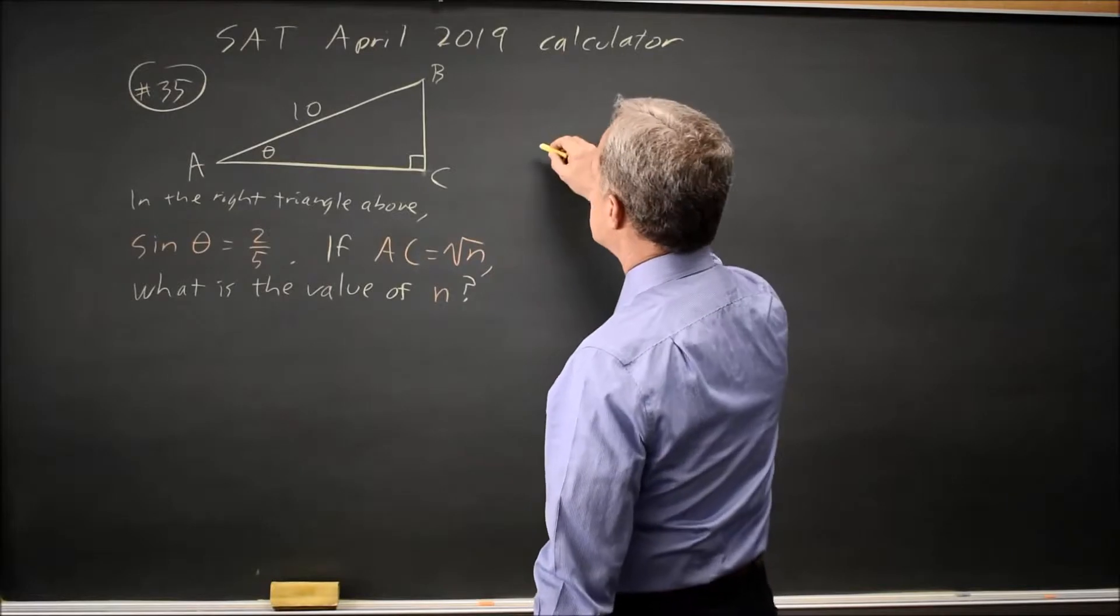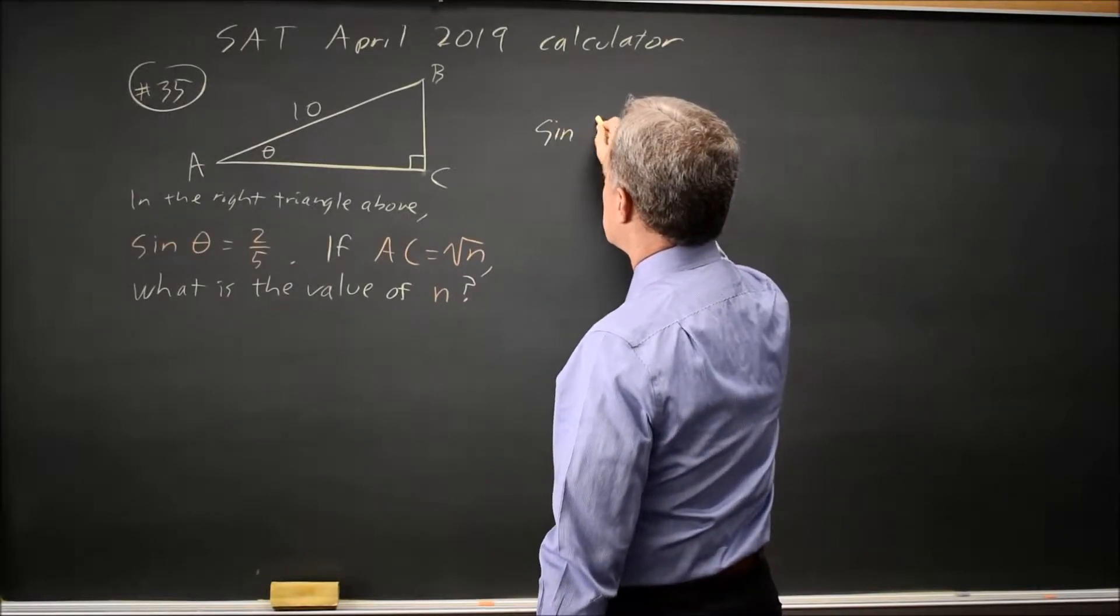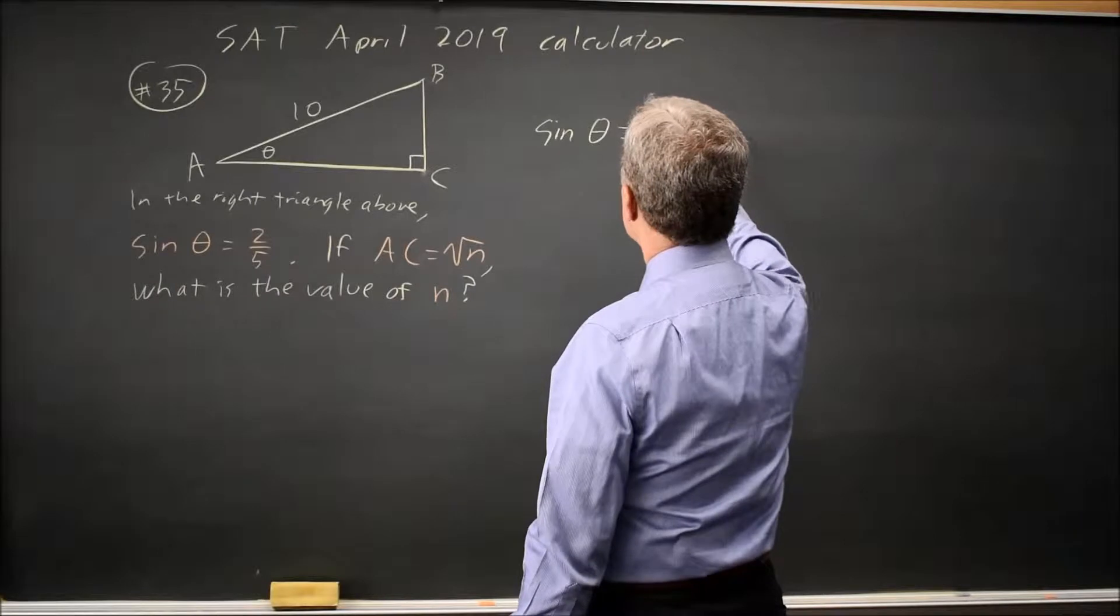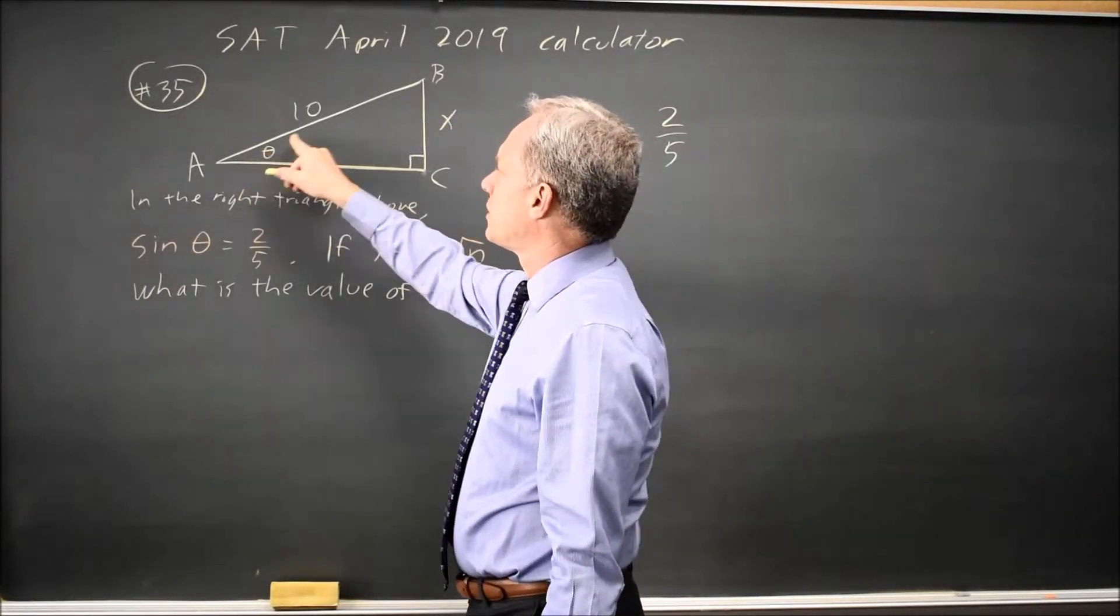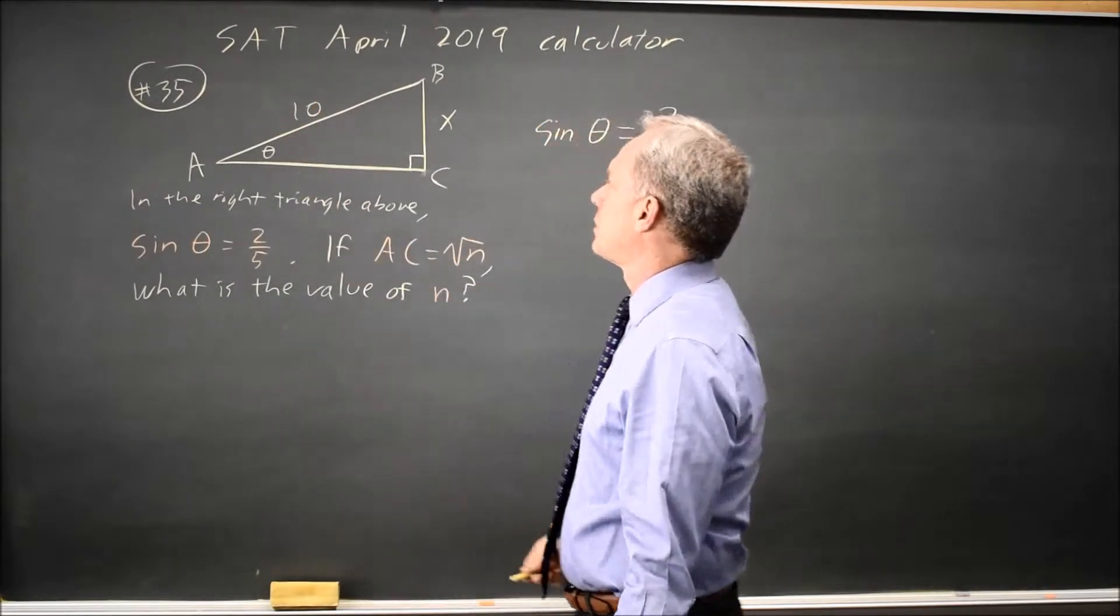So if the sine of theta equals 2 over 5, and let's call this side x. The sine of angle theta is the opposite side over the hypotenuse.